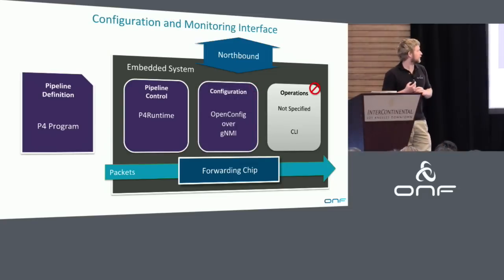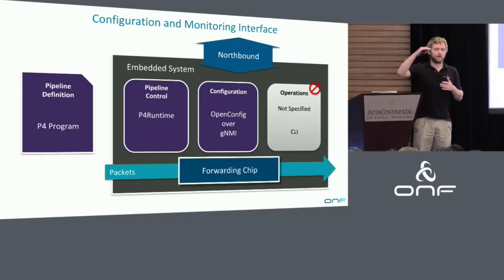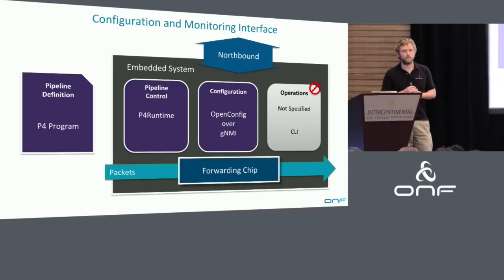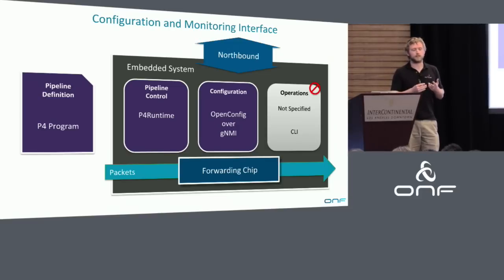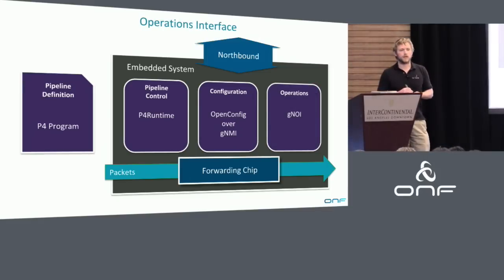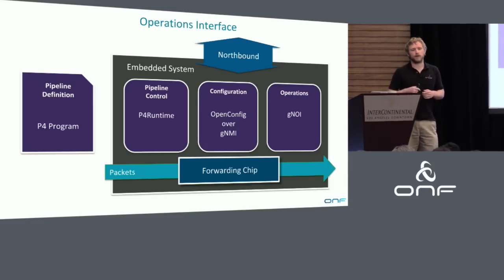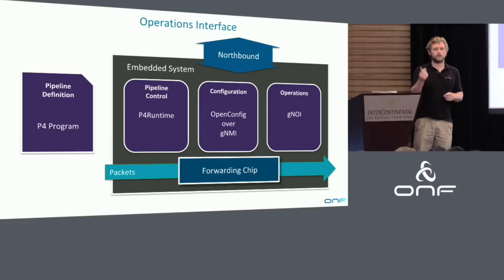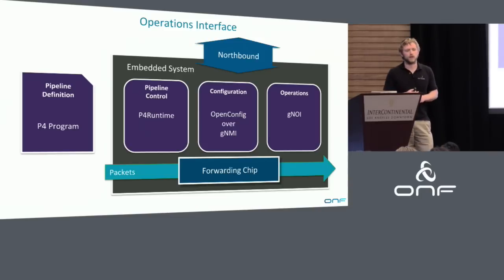On the configuration side, we're adopting a subset of OpenConfig models around interfaces, QoS, VLANs - more platform-related models than control plane models. We're using a protocol from the OpenConfig working group called GNMI, another gRPC-based service which supports not just the ability to set and get config but also stream updates from the data plane up to the control plane, listen for alarms, and get telemetry information from devices. On the operations side, we're using a suite of protocols under the umbrella of GNOI - Network Operation Interfaces - for things like rebooting a device, pushing new firmware, adding certificates, doing basic testing. The ephemeral types of things you need when putting a box into production.